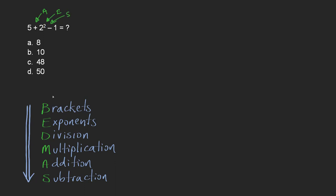So first thing will be, let's see, we don't have any brackets. We do have an exponent, so we'll deal with that. And then after that we'll figure out what's next. So let's write this out. It's 5 plus 2 squared minus 1.